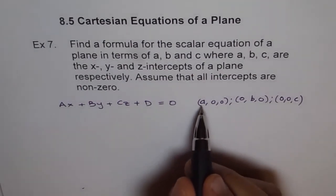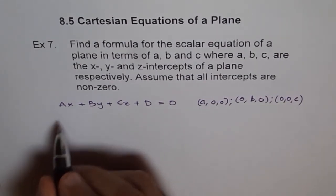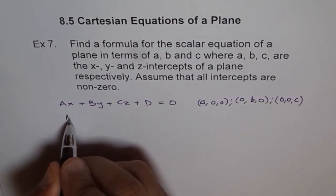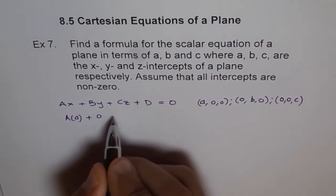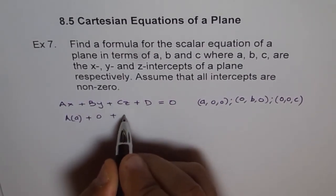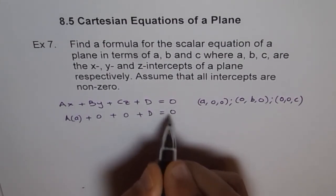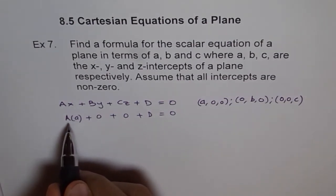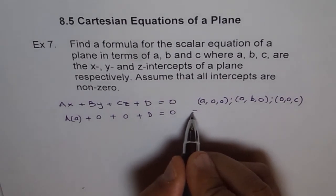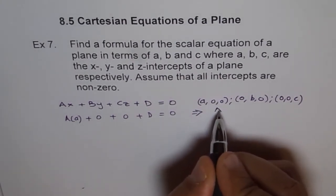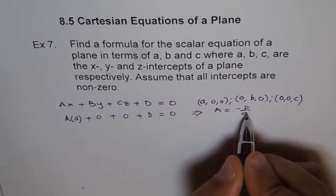So if I write point A, which is the X intercept, then I get A for X, I get A times A plus 0 for Y, that means 0, 0 for Z, that means this, and we get plus D equals to 0. Well, from here we can find what A is in terms of D, right? So this implies that A equals to minus D over small a.